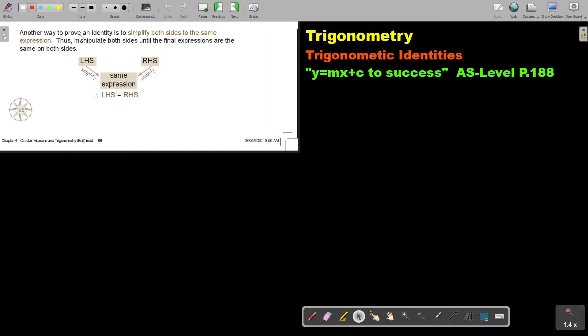Another way to prove an identity is to simplify both sides to the same expression. Thus, manipulate both sides until the final expressions are the same on both sides. You bring the left-hand to an expression, the right-hand to the same, and then you prove that the left-hand side is equal to the right-hand side.